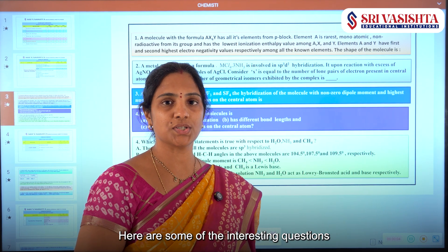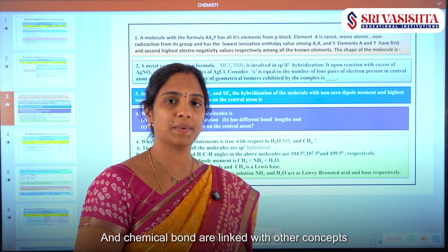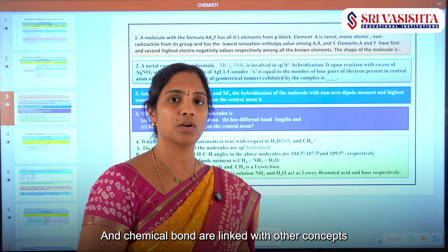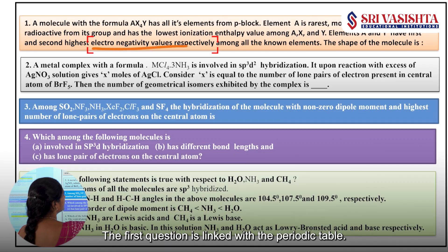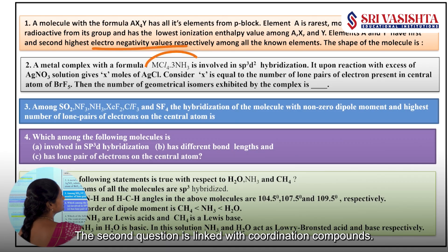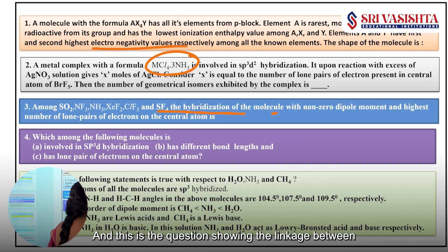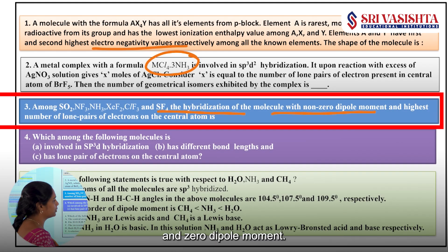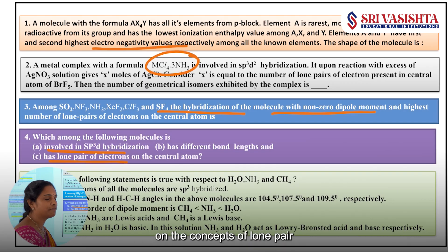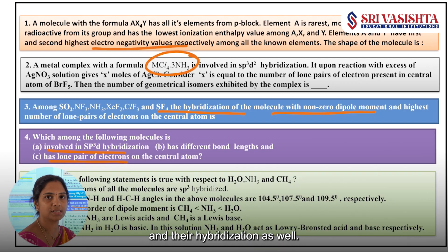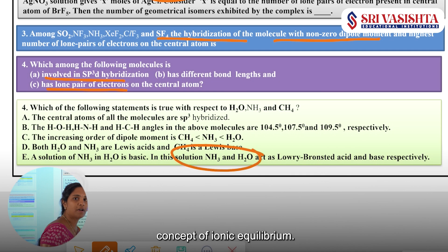Here are some interesting questions asked in the past three year papers where the concepts of chemical bond are linked with other concepts of chemistry. The first question is linked with the periodic table, the second question is linked with coordination compounds, and this question shows the linkage between hybridization and zero dipole moment. You must also have a clear idea on the concepts of lone pair and their hybridization. And this question is based on the concept of ionic equilibrium.